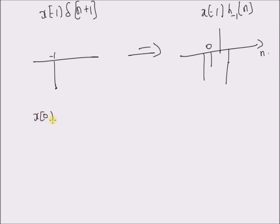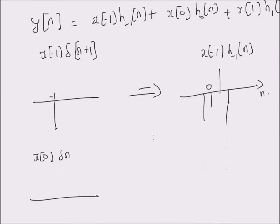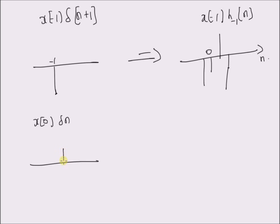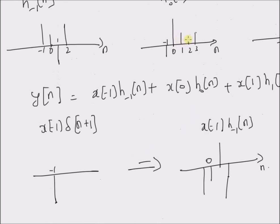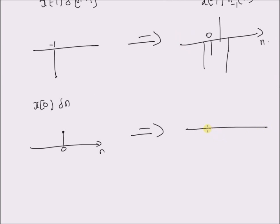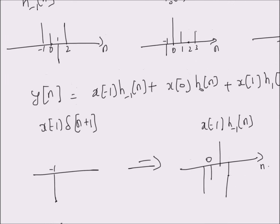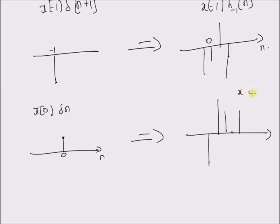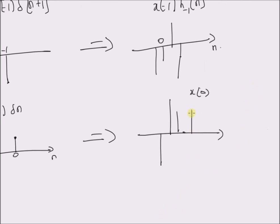Similarly, x(0) multiplied by delta(n) is given by the value of x(n) at n equal to 0, which is a positive value. When you multiply this with h_0(n), it will be amplified. This is x(0) multiplied by h_0(n).